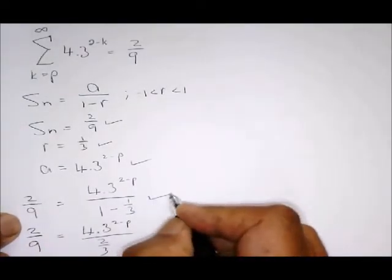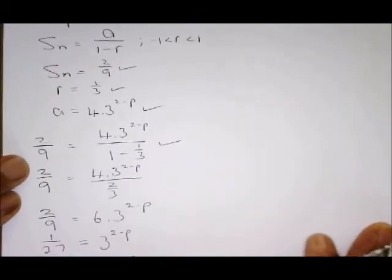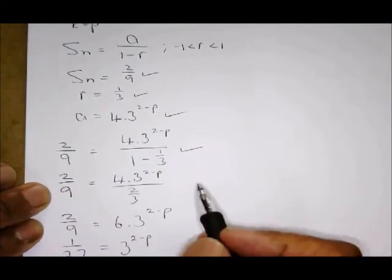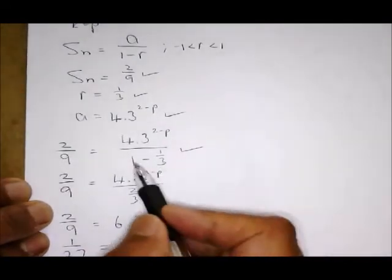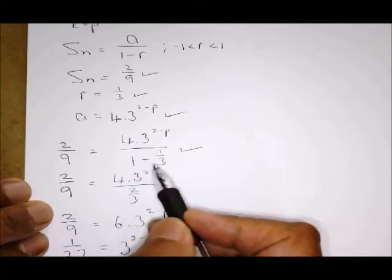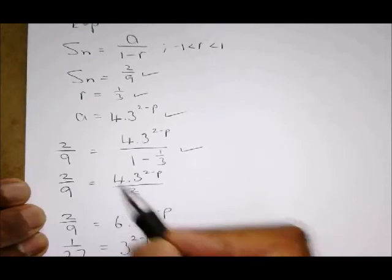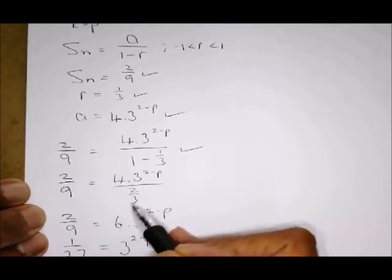Then you do your substitution into the formula. Now there's various ways of simplifying this problem. You choose what works for you. What works for me is to first simplify with these two. So what is one minus a third? It is two thirds. Then on my calculator, I just basically say four divide by two thirds, and I get a six.